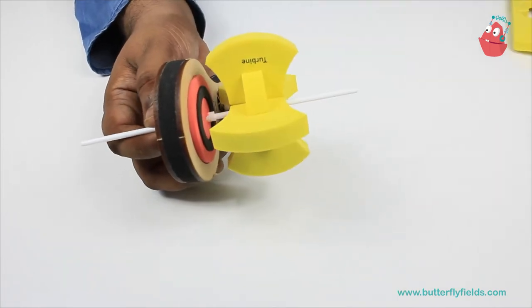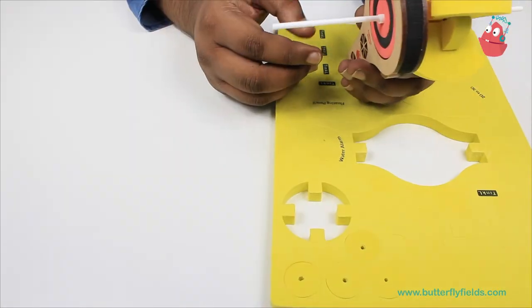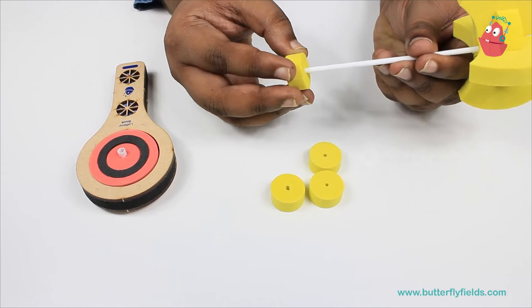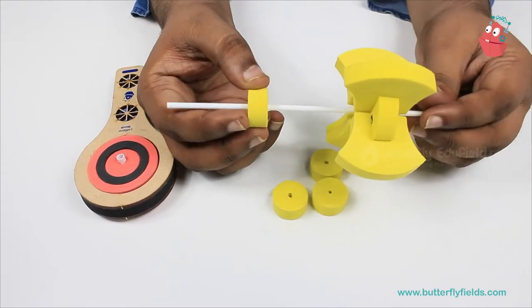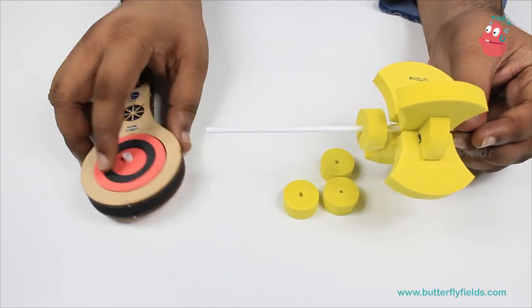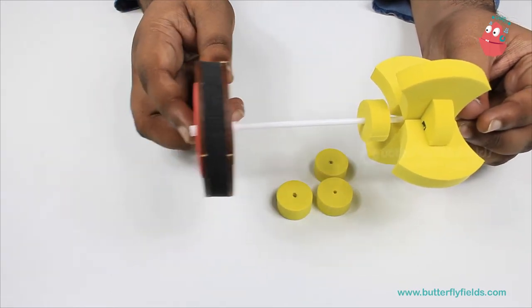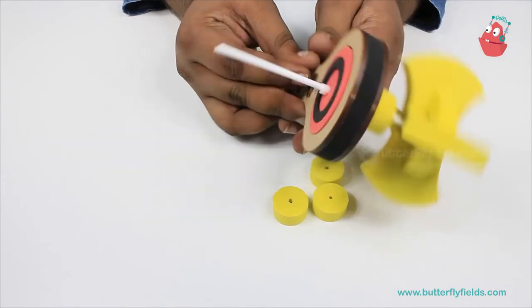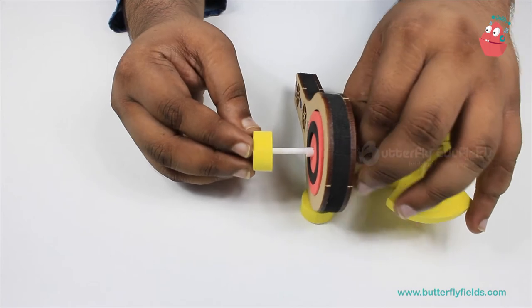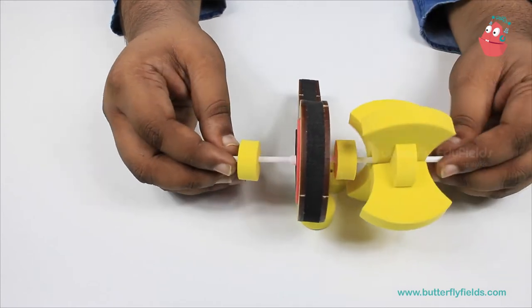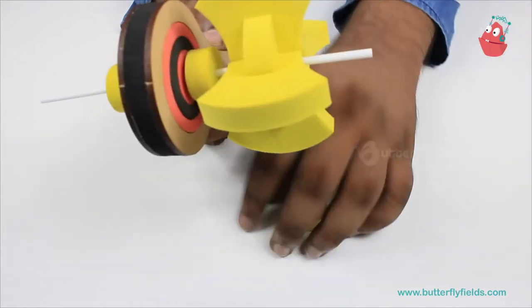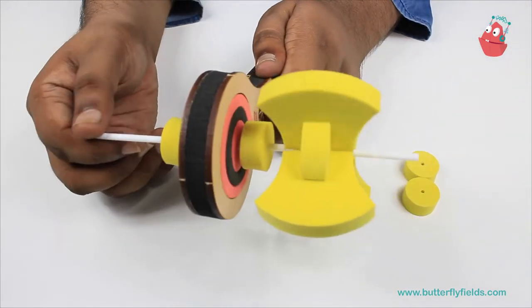This one piece will fix here. First, we will fix everything, and then we can adjust the distances. This straw can now go inside, and from the other end, we can fix another piece. Then we can adjust the distance so that this is moving freely.